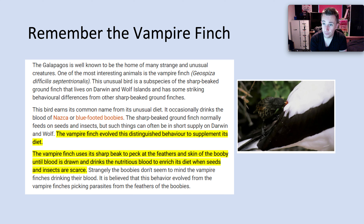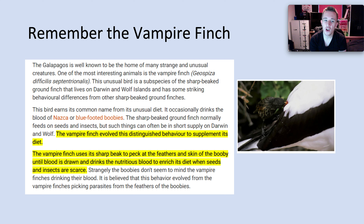Now, the vampire finch — it's called a vampire finch. It's one of the many, many strange creatures on the Galapagos Islands. The unusual bird is a subspecies — that means it's part of a species — of the sharp-beaked ground finch. The bird earns its common name from its unusual diet: it occasionally drinks the blood of Nazca. The sharp-beaked ground finch normally feeds on seeds and insects, but such things can often be in short supply. The vampire finch evolved and was then able to eat the blood of other creatures to survive — hence why it got the name of the vampire finch.